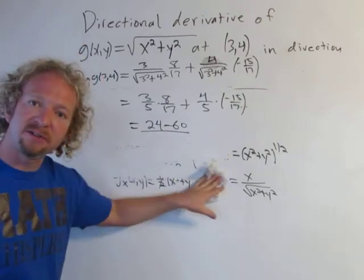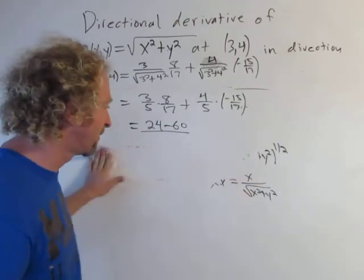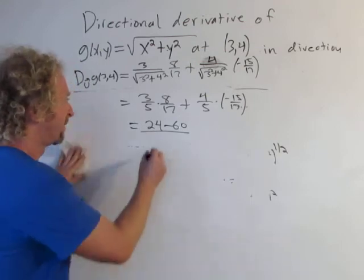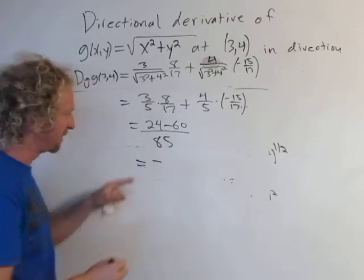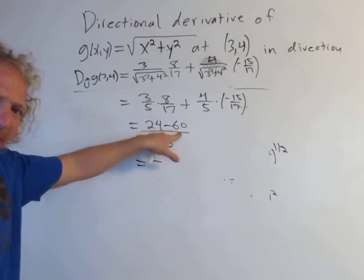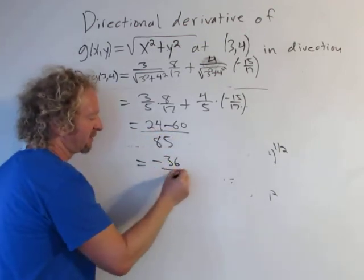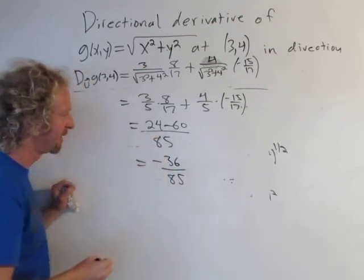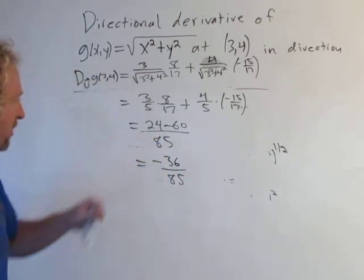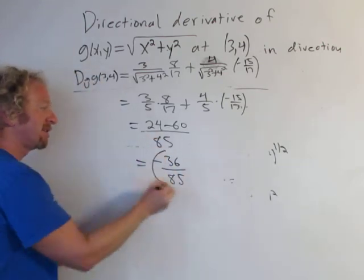It's going to be negative. 24 minus 6. Let's not get stuck here. This is going to be negative. I think negative 36 over 85. 36 plus 24 should give you 60. Yeah. Looks okay. And I'd say that's the directional derivative.